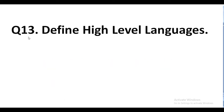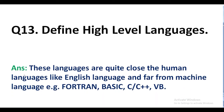Question number 13. Define high level languages. Answer. These languages are quite close to human languages like English and are far from machine language. Examples: Fortran, Basic, C, C++, Visual Basic.